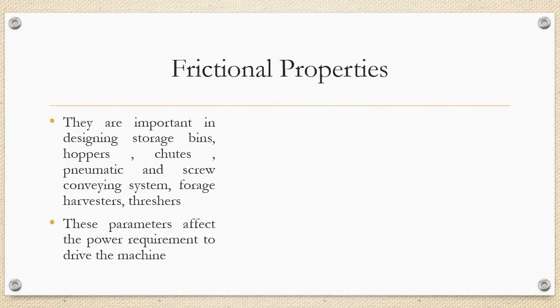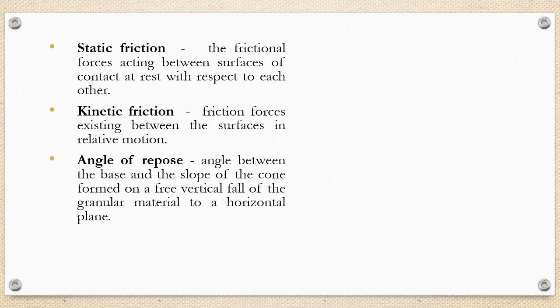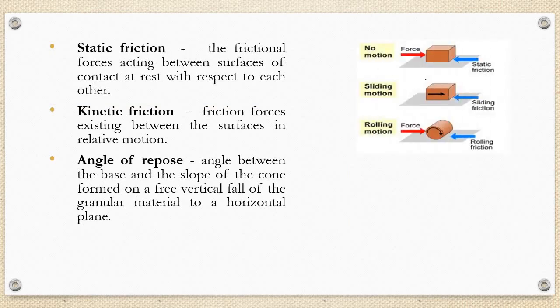Frictional properties are important in designing storage bins, hoppers, chutes, pneumatic and screw conveying systems, forage harvesters and threshers. These parameters affect the power requirement to drive the machine. Static friction: the frictional force acting between surfaces of contact at rest with respect to each other is known as static friction. The friction force existing between surfaces in relative motion is defined as the kinetic friction.